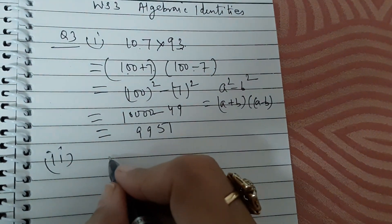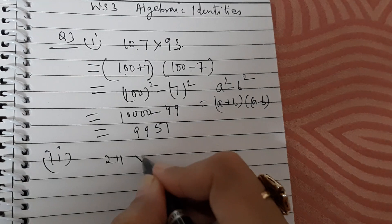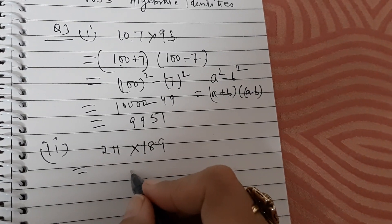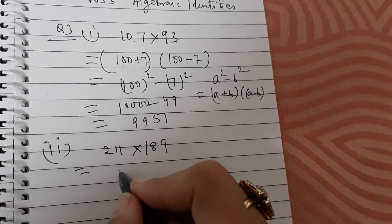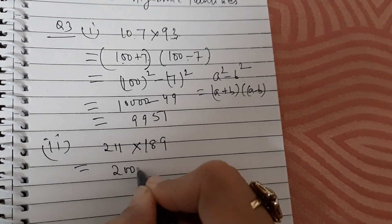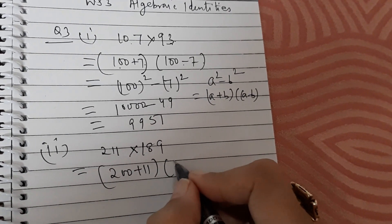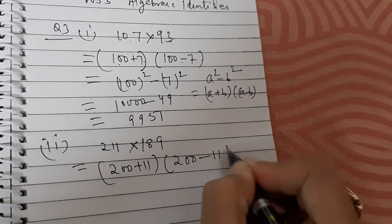211 can be written as 200 plus 11 and 189 can be written as 200 minus 11.